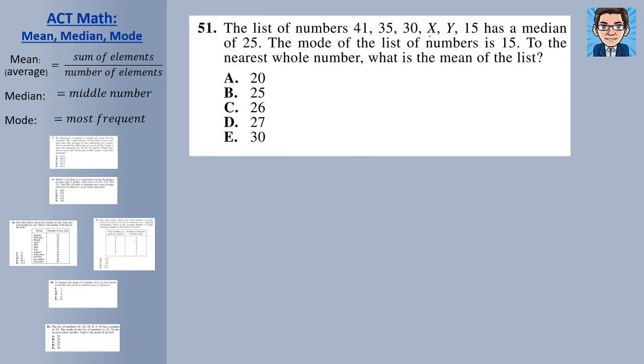And the last problem, we've got two unknown numbers in this list. So we've got 41, 35, 30, and then we've got two unknown numbers, and then we've got 15. It tells us the median is 25 and the mode is 15, and we want to find the mean of the whole list. So if the mode is 15, that means that one other of these elements have to be 15 in order to get 15 to be the most frequent element. So we know that one of these has to be 15.